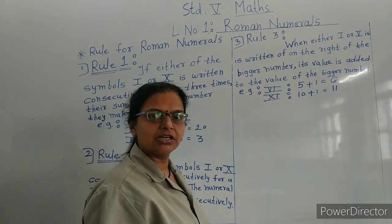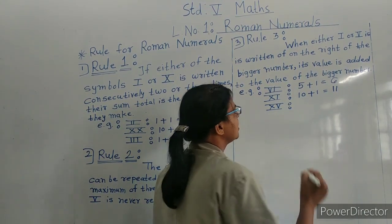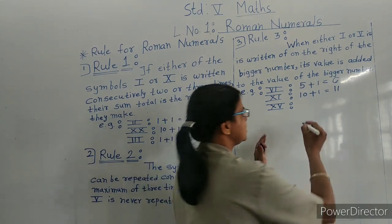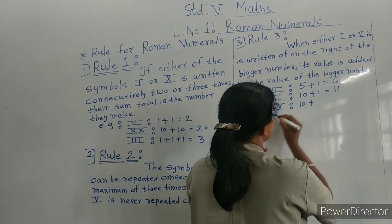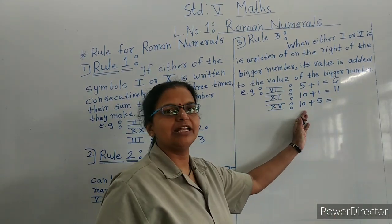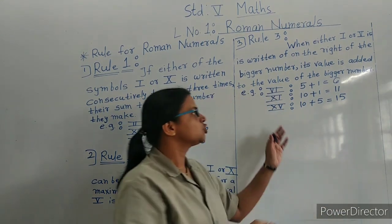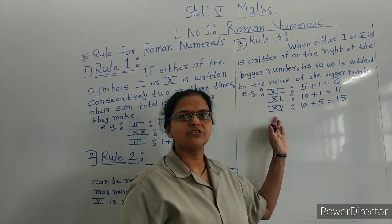Third example, XV: X value is 10, V's value is 5, so 10 plus 5 is equal to 15. XV means 15.